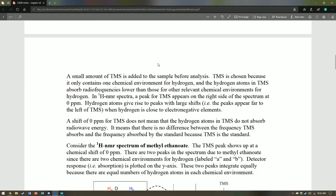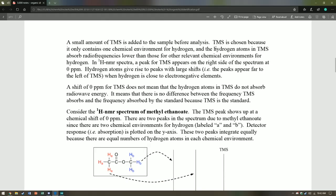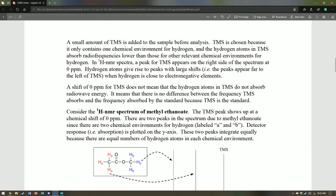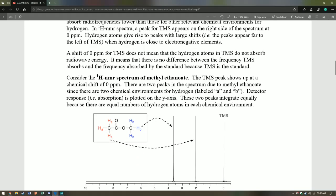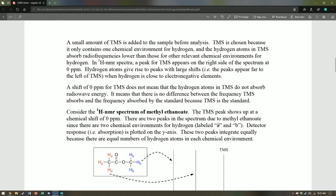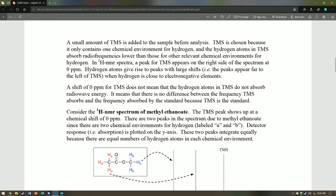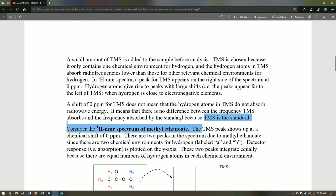A small amount of TMS is added before the sample, and this is chosen to be the standard as it only has one chemical environment for hydrogen, they're all in the same environment, and therefore the peak would be very strong and visible. In addition, it evaporates quickly, so it's gone when you're doing your analysis.